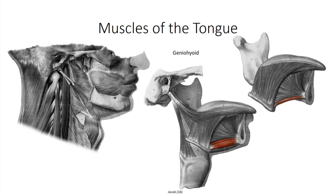The first of the extrinsic tongue muscles to discuss is the genioglossus. It originates off the mental spine of the mandible, just superior to the geniohyoid, and its fibers project backwards in a fan-like pattern, with the inferior fibers inserting into the root of the tongue and superior fibers on the inferior surface of the body. Contraction assists with protrusion of the tongue forward. Unilateral contraction causes greater protrusion on the ipsilateral side, resulting in deviation of the tongue to the contralateral side. The superior fibers also serve to depress the body of the tongue toward the floor of the oral cavity.